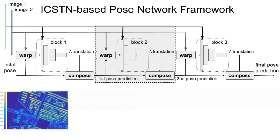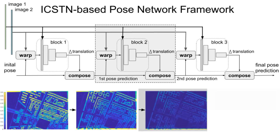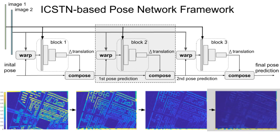The inverse compositional spatial transformer networks framework has multiple network blocks predicting the relative translation. Based on the homography transformation, a new image can be synthesized by warping the original image with the corresponding relative pose.